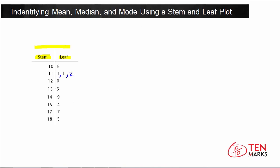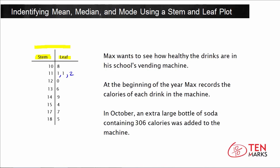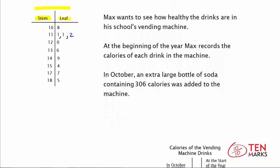Now let's take a look at a problem, and we'll use a stem and leaf plot to get some answers about the data. Max wants to see how healthy the drinks are in his school's vending machine. At the beginning of the year, Max records the calories of each drink in the machine. In October, an extra large bottle of soda containing 306 calories was added to the machine. Now let's take a look at this in a stem and leaf plot.